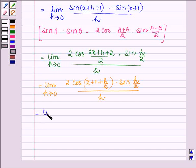Or it can further be written as limit as h approaches 0 of cos of x plus 1 plus h over 2, times limit as h over 2 approaches 0 of sin h over 2 over h over 2.